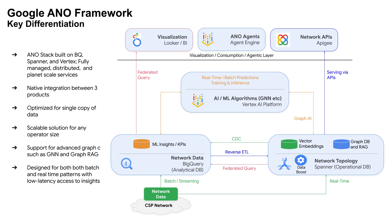This is a deeper look at the ANO framework shown in the previous slide. Key points: this stack is built on BigQuery, Spanner, and Vertex, which are fully managed, distributed, and capable of planet scale. There is native integration between the three systems. It is optimized to use a single copy of data, scalable for any operator size, uses GNN and GraphRAG, and can ingest data in both batch and real-time form.